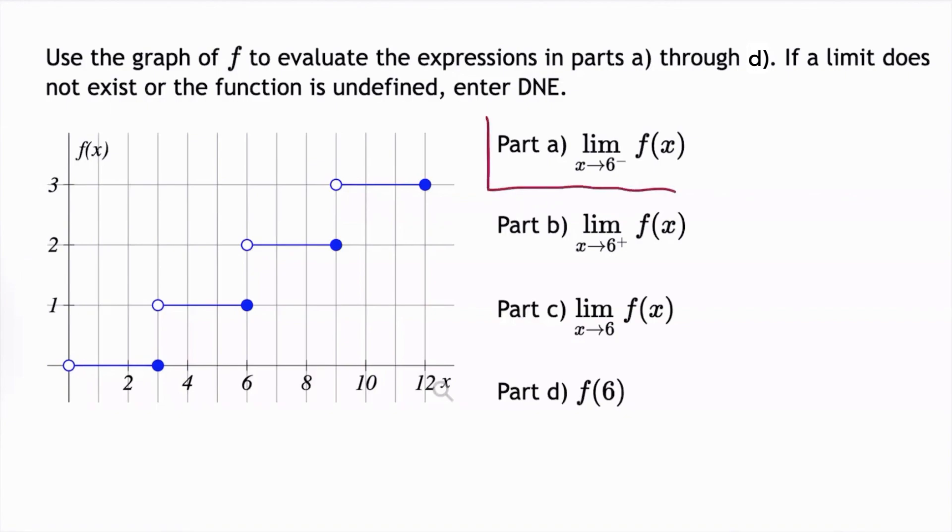So in part a, we need to find the limit as x approaches 6 from the left of f(x). So here's 6 on the x-axis, and all along this vertical line, x is equal to 6.